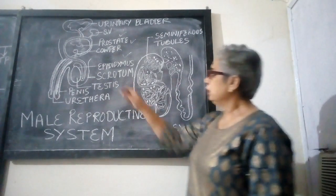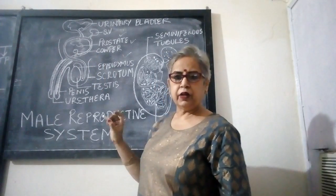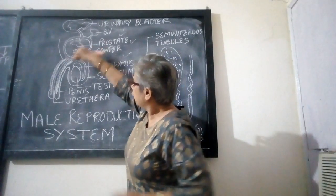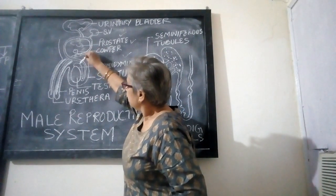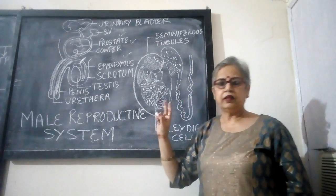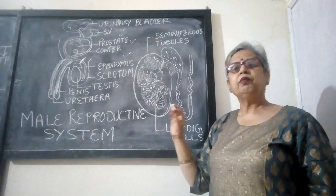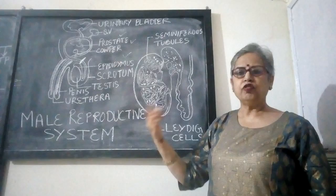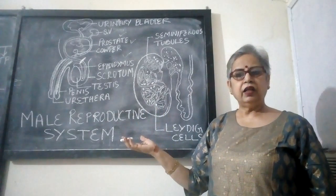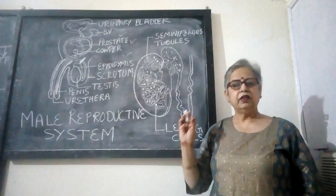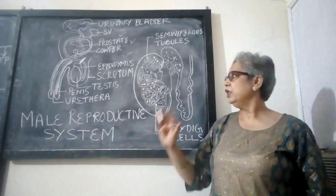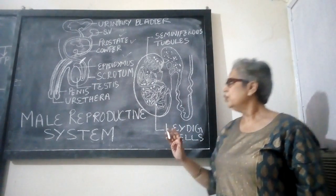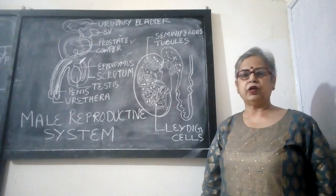These tubes (vas deferens) are responsible for carrying the sperms. During vasectomy, what happens is that these tubes are cut and ligated, so the sperms cannot enter into the semen. The semen is now without sperm. There are some myths in the minds of males that vasectomy leads to loss of virility, but there is no such effect on the person. It helps in family planning and avoiding pregnancy due to sexual intercourse.